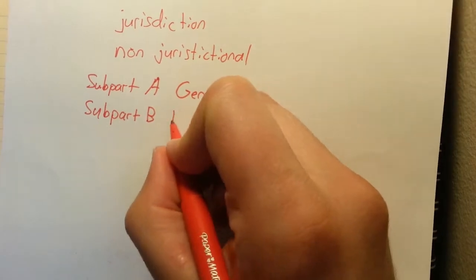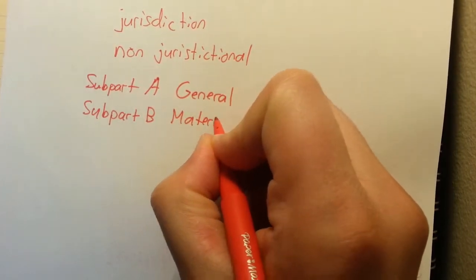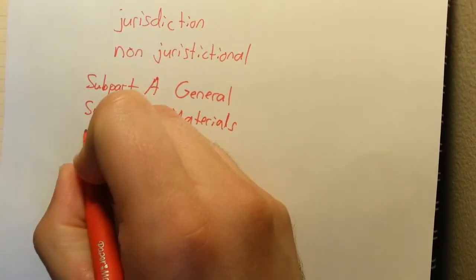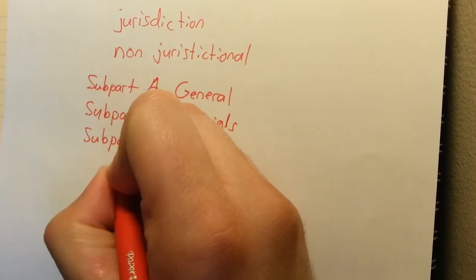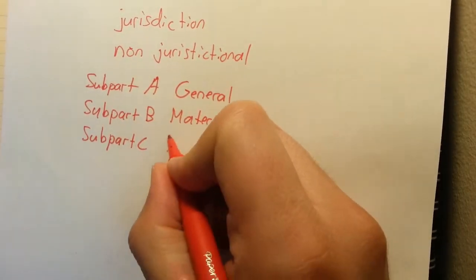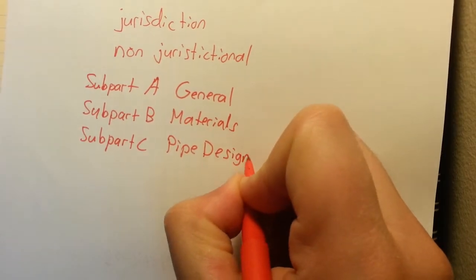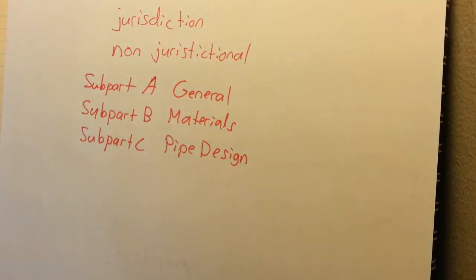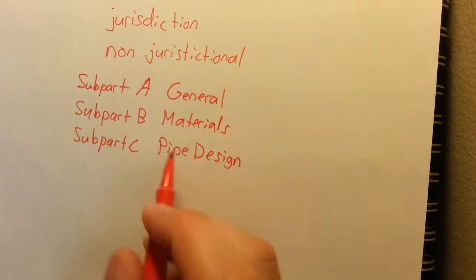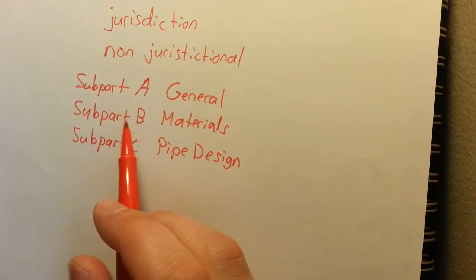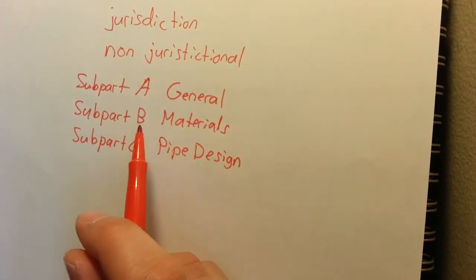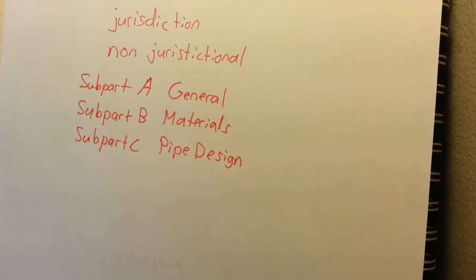Subpart B is materials. Subpart C is pipe design. I talked about this in my other video. It covers the steel pipe design formula and the different safety factors,